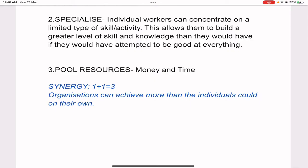Synergy means one plus one equals three. Organizations can achieve more than individuals could on their own. When two people come together to do the same task, time is saved and more work is done. For example, if I do 10 dishes it takes me 10 minutes, and if my friend does 10 dishes it takes her 10 minutes, but if we both work together on those 10 dishes it takes only five minutes. So two people combining their effort produce the output of three people — that is what one plus one equals three means.